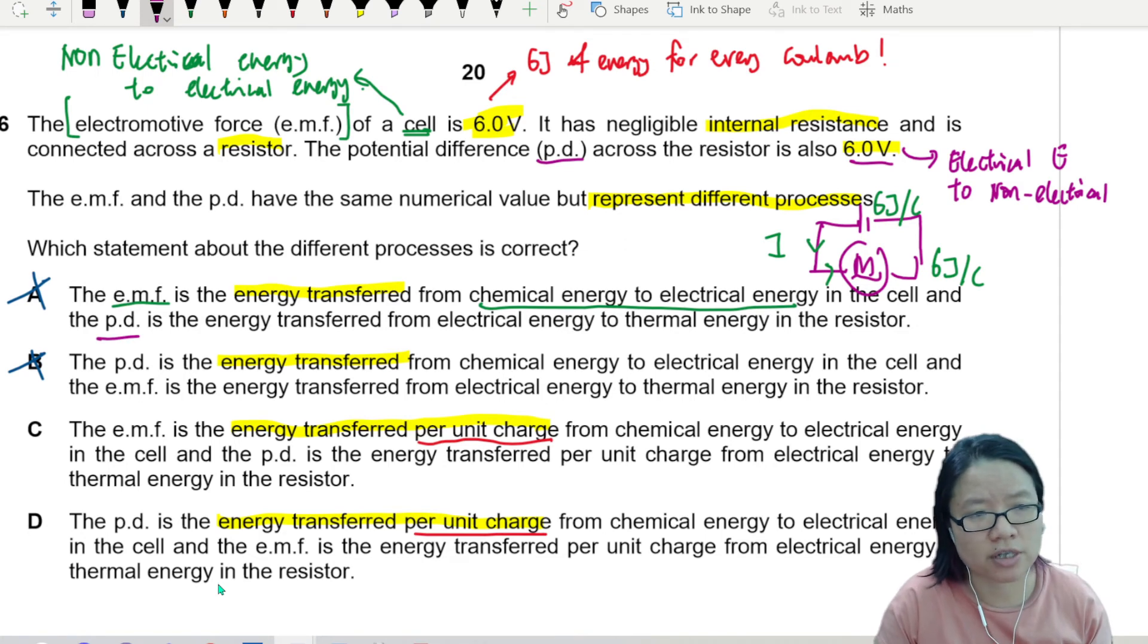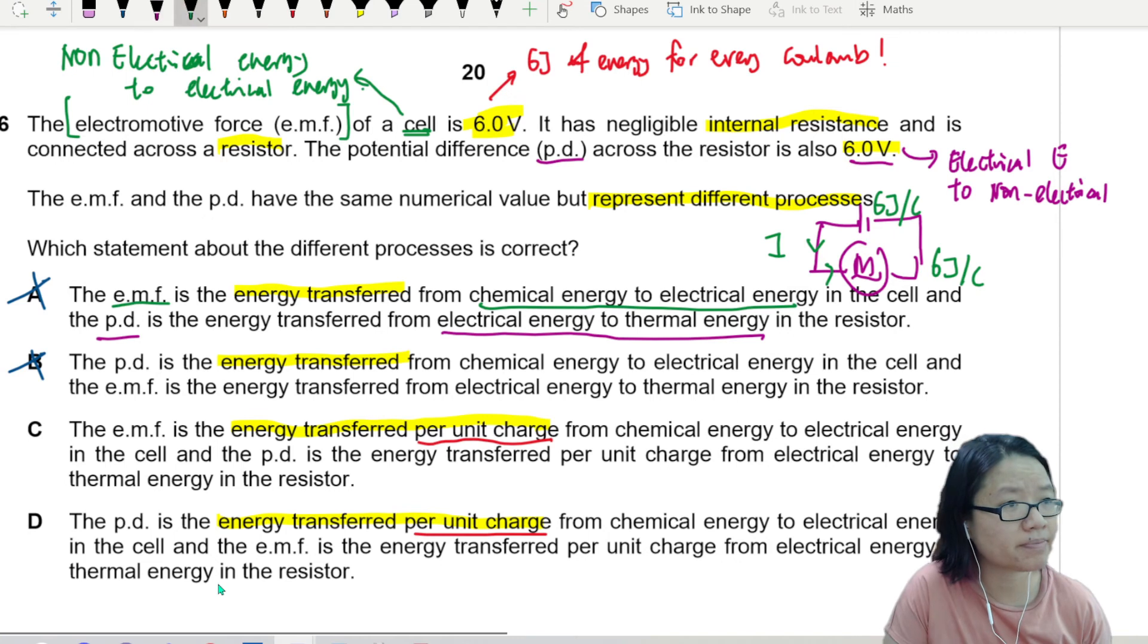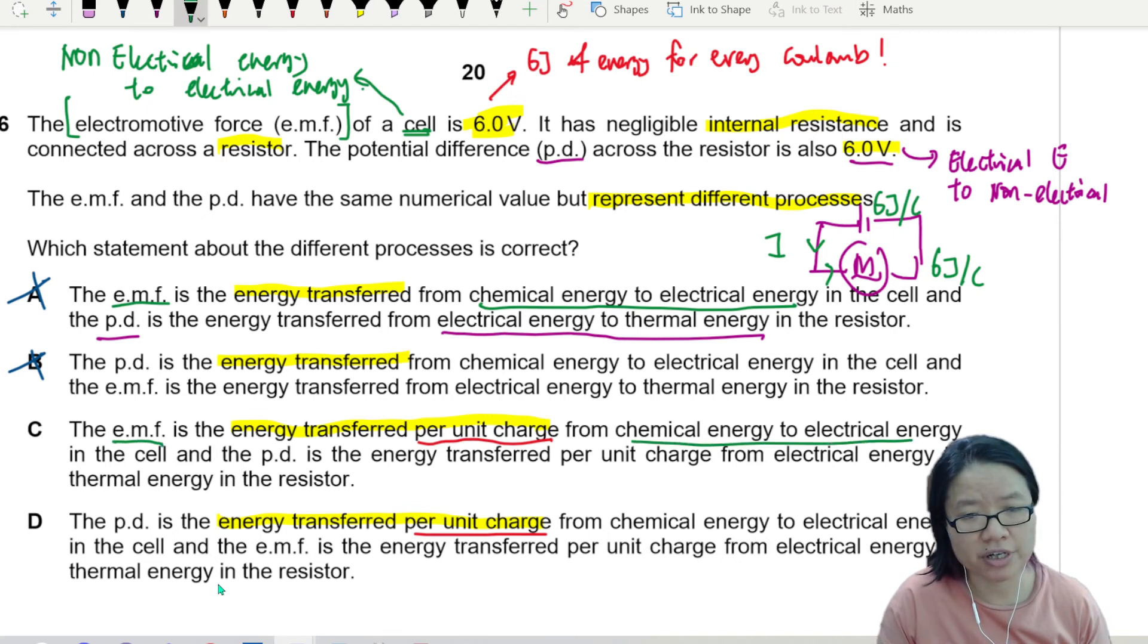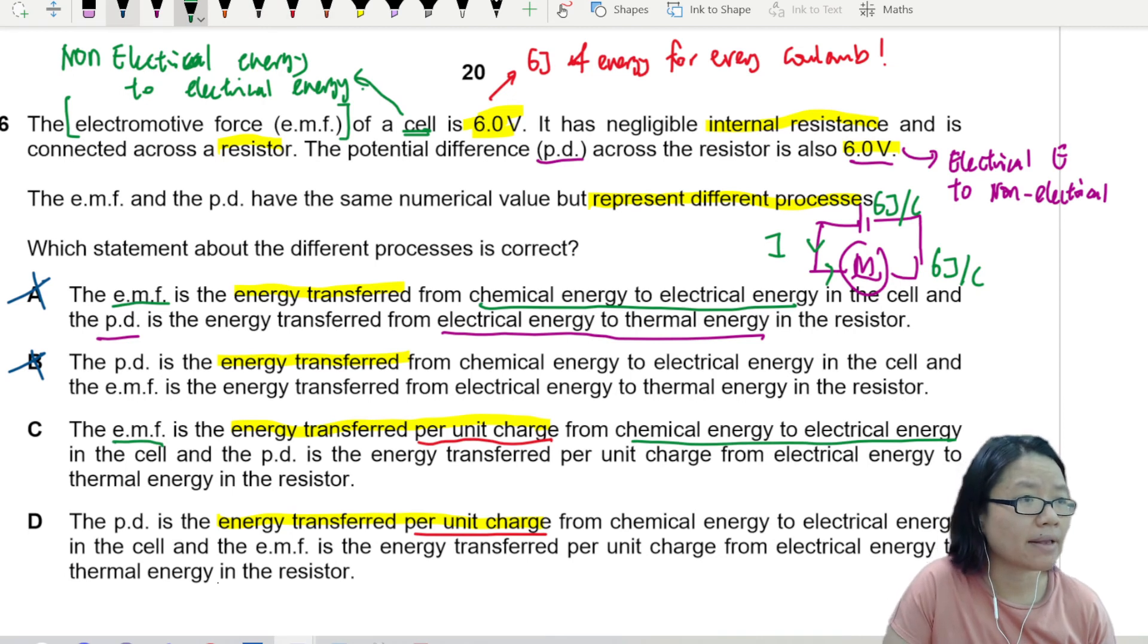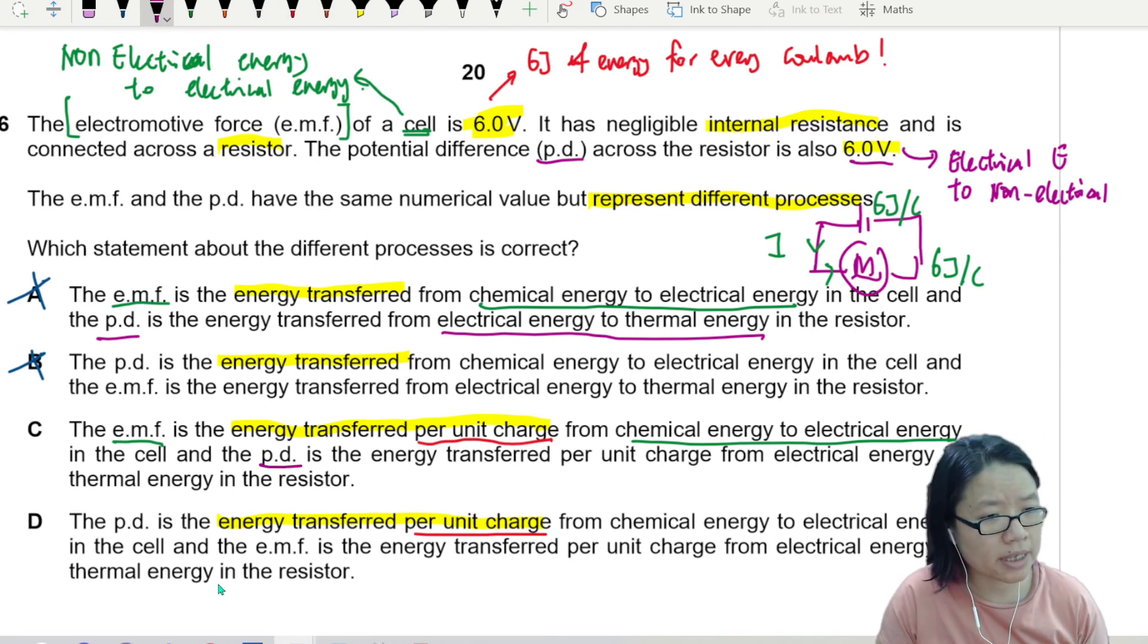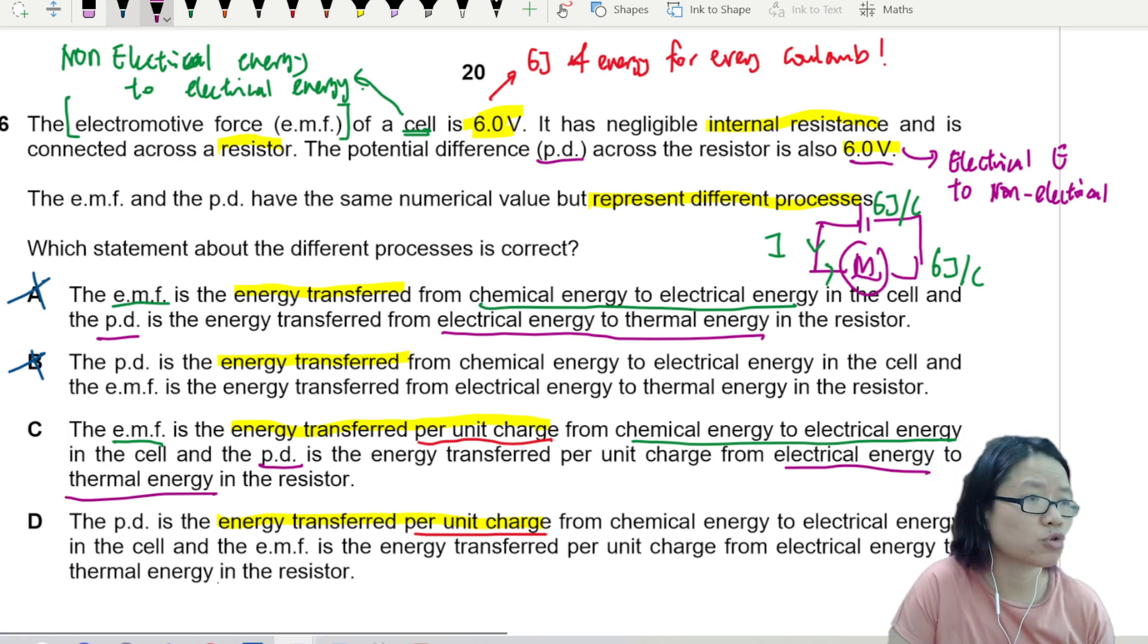So here, PD is energy transferred from electrical energy to thermal energy. Correctly. So since A and B is out, we need to find the one that has EMF, chemical energy to electrical energy, and PD, electrical energy to thermal energy in the resistor. Sure, that answer is C.